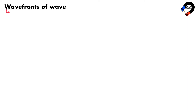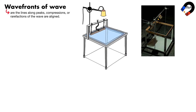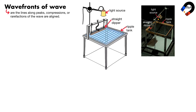Wave fronts are the lines along which peaks, compressions, or rarefactions of the wave are aligned. In a ripple tank, a shallow tray of water with a light source shining down through it, the light illuminates the wave fronts making them visible. A straight dipper can be used to create straight wave fronts. When the dipper is vibrated up and down, it creates a series of parallel wave fronts. The screen below the ripple tank is used to observe the wave fronts.